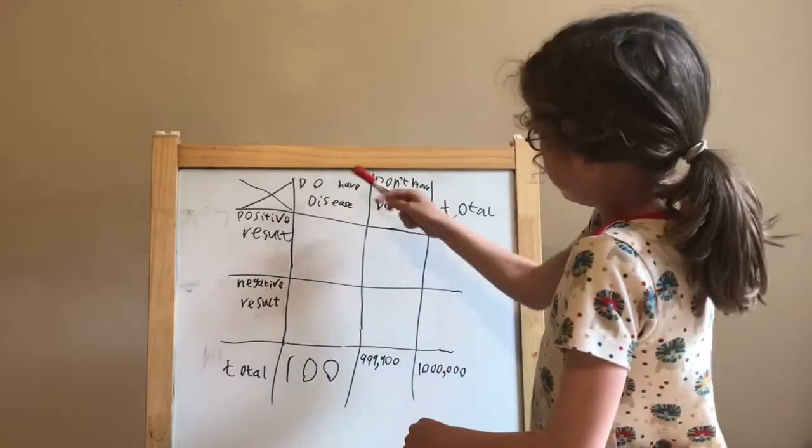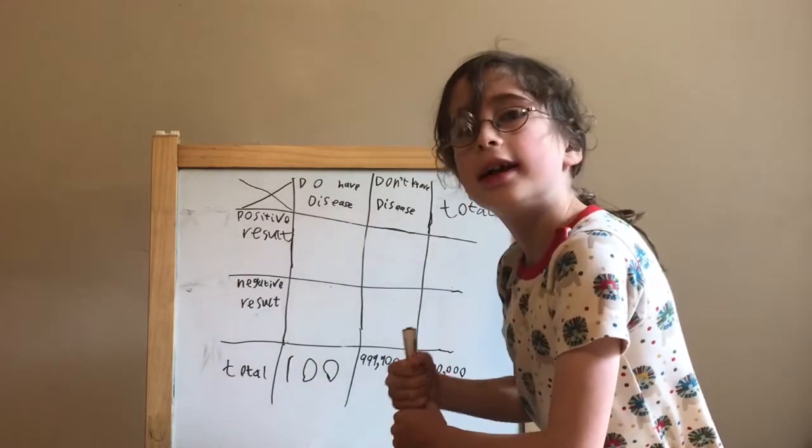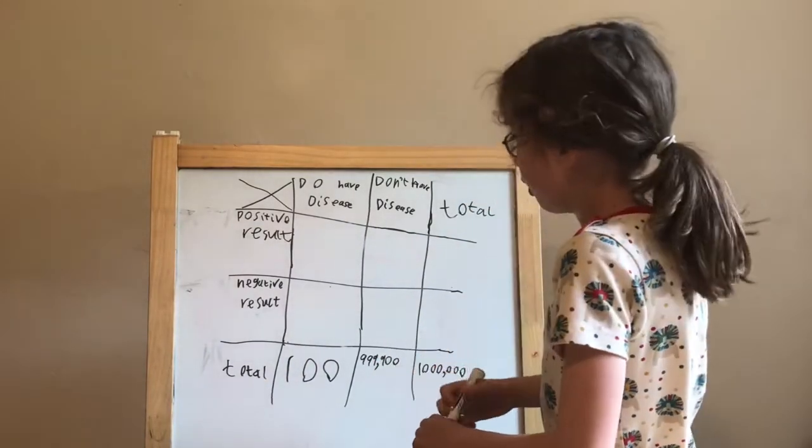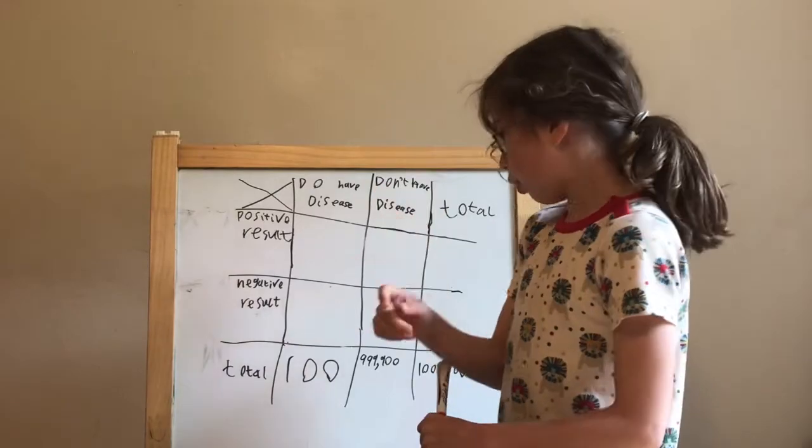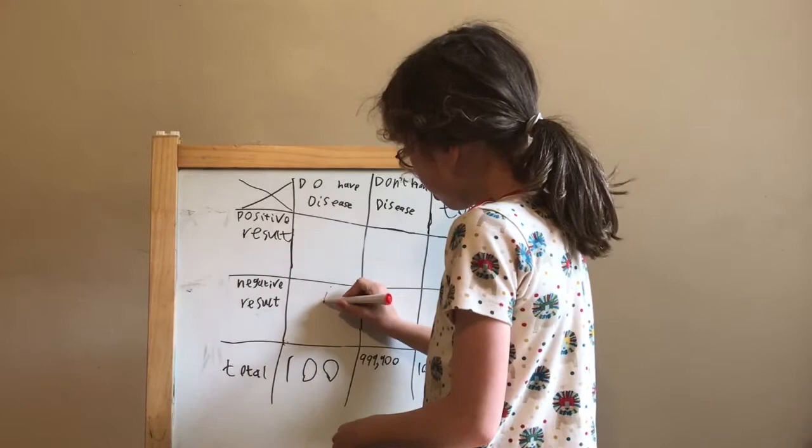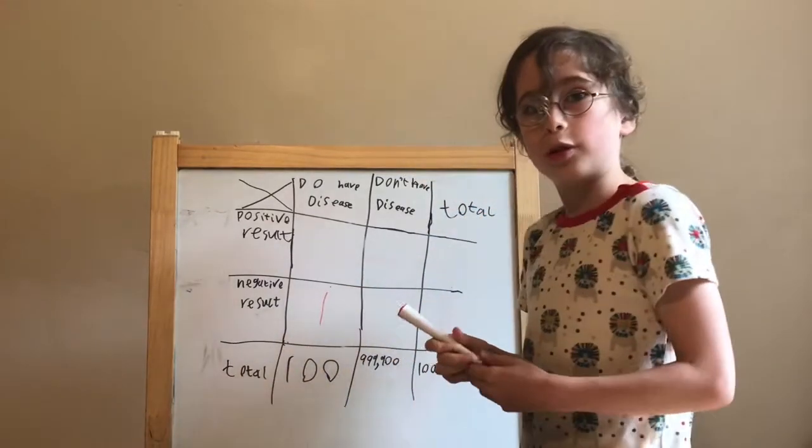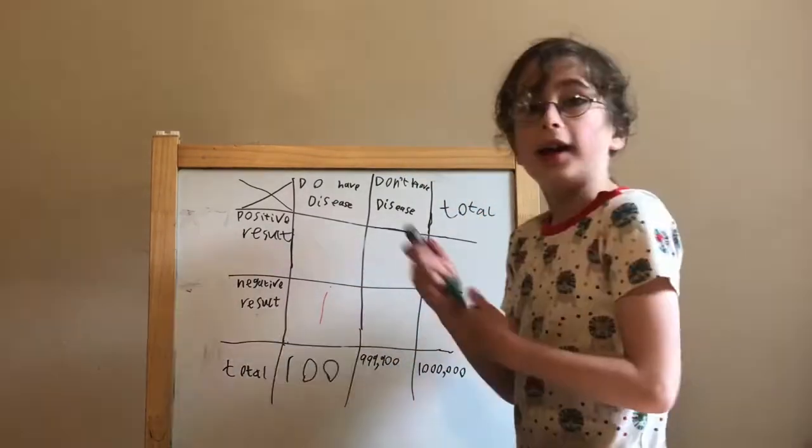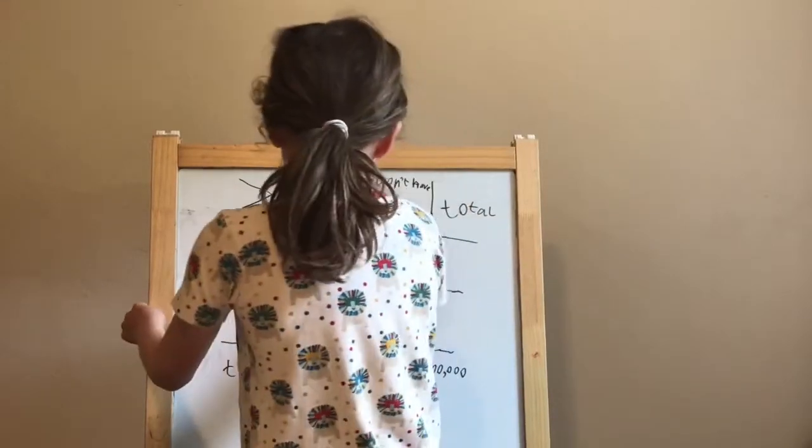So we've got 100 people who do have it. If the machine is 99% right, then one of them will get it wrong. So 99 people will be in the positive result, but one will be in the negative result even though they have it. And the 99 is in green.